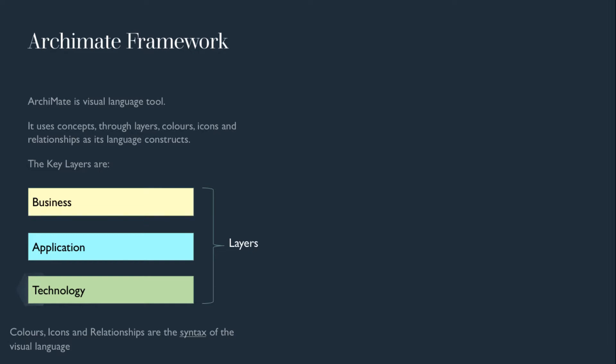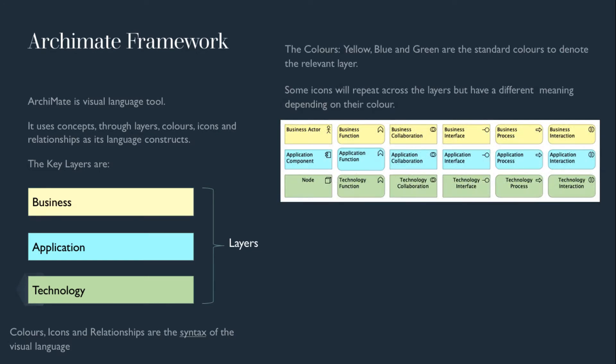The key layers are business, application and technology. Colors, icons and relationships are the vocabulary or syntax of the visual language. The colors yellow, blue and green are the standard colors to denote the relevant layers.